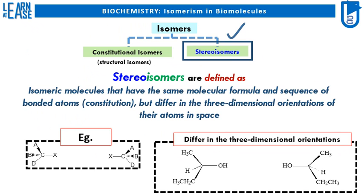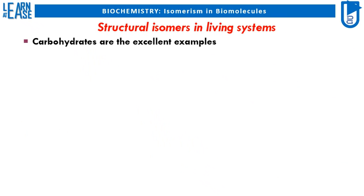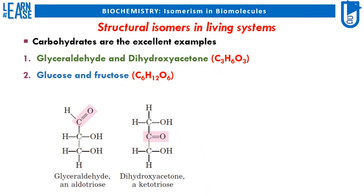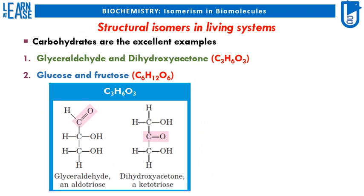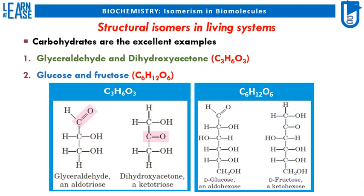Now, I will show examples of structural isomers found in living systems. Carbohydrates are excellent examples. Glyceraldehyde and dihydroxyacetone both have different structures but the same chemical formula C3H6O3. Similarly, glucose and fructose both have different structures but the same chemical formula C6H12O6. The images show these structures, which are visibly different but share the same chemical formula.